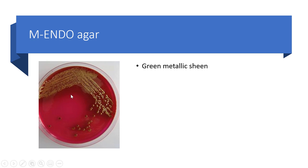On EMB (Eosin Methylene Blue) Agar, E. coli produces a characteristic green metallic sheen, as you can see in the figure. Thanks for watching this video about E. coli. If you have any inquiries, please comment in the comment box. Please subscribe to the channel and like the video.